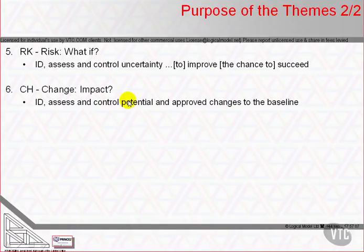Sixth is the change theme. The change theme describes how PRINCE2 assesses and acts on issues which may impact on any aspects of the project's baseline of agreed plans and completed products. In PRINCE2, issues may be any of unanticipated general problems, requests for change, instances of quality failure, or questions raised by anyone at any time.